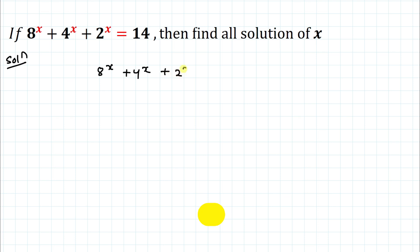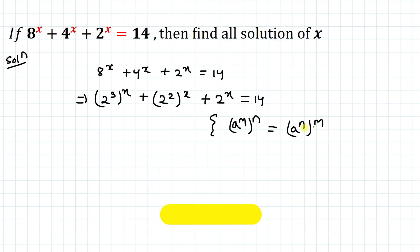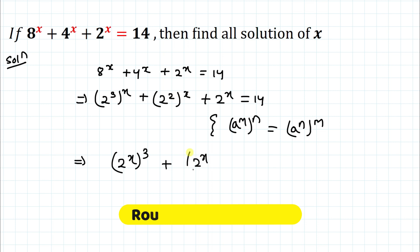We have 8^x + 4^x + 2^x = 14. In the next step, we can write 8 as 2³, so (2³)^x, and 4 as 2², so (2²)^x, plus 2^x equals 14. Using the exponential law that (a^m)^n = (a^n)^m, we can interchange the positions of the powers to get (2^x)³ + (2^x)² + 2^x = 14.